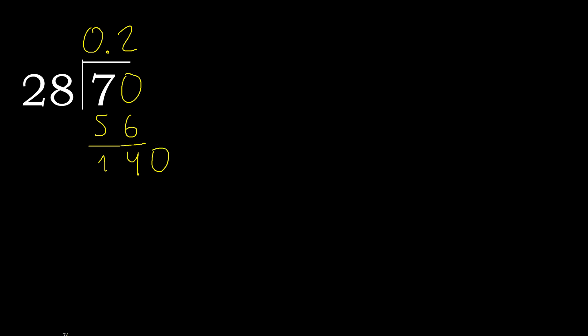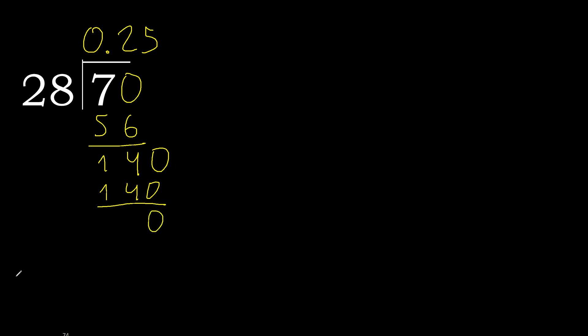That is not a whole number, therefore complete — always complete with 0. 0 point. 140. 28 multiplied by 5 is 140. That is not greater — perfect. Subtract 0. 0, therefore finish.